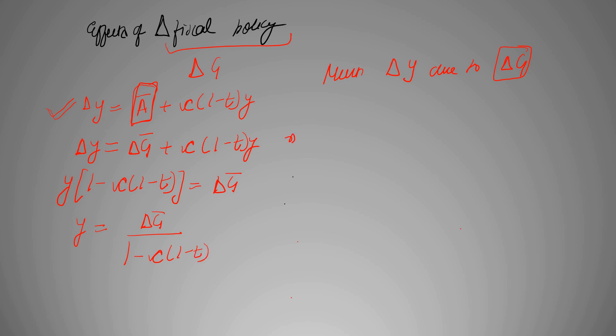Now, if we separate both terms, we get 1 over (1 minus c(1 minus t)) multiplied by change in government expenditure or government spending. And this guy over here is our multiplier, government's multiplier.